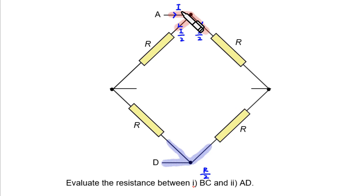So what's the resistance seen by this current? As it tries to move from point A to point D, it sees two R's in parallel with two R's. And that gives us a resistance of R.